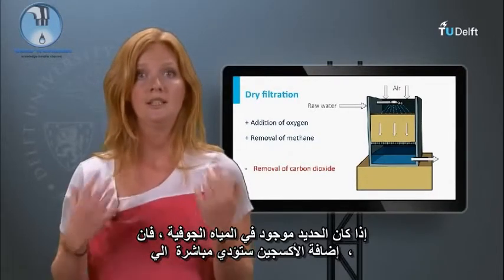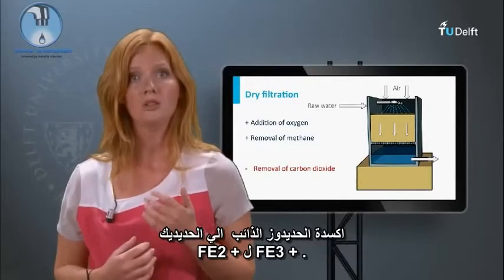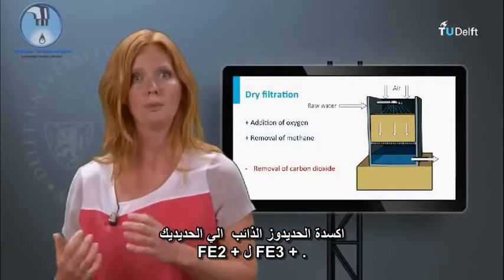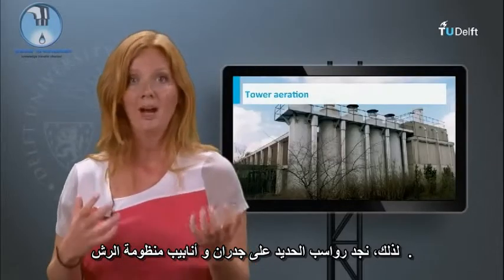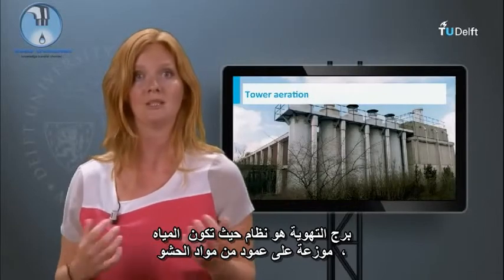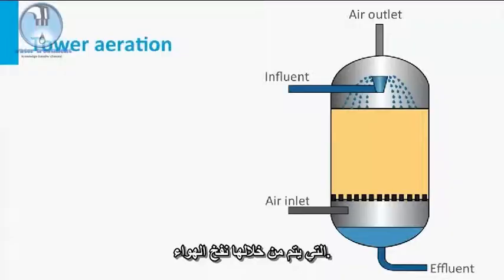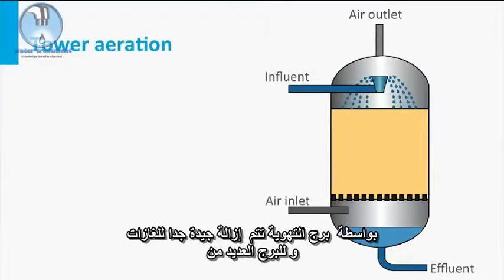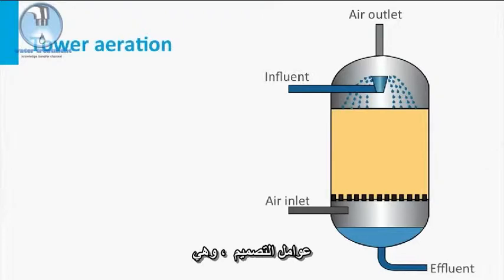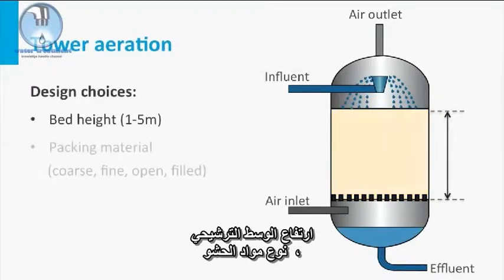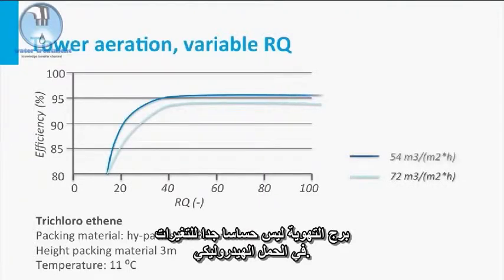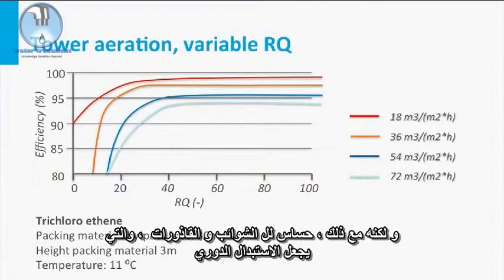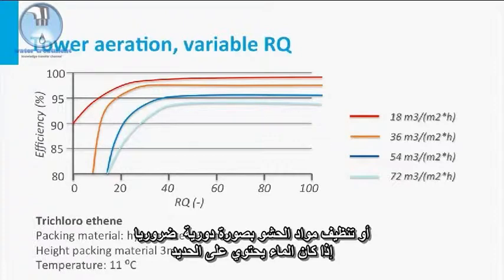If iron is present in the groundwater, the addition of oxygen to the water results almost directly in the oxidation of the dissolved Fe2+ to Fe3+. Therefore, on the walls and pipes of the spraying systems, iron deposits can be found. Tower aeration is a system where water is distributed over a column with packing material, through which air is blown. With tower aeration, very good removal of gases is possible, and the tower can be configured by a few clear design choices, namely bed height, type of packing material, air flow direction and choice of RQ. Tower aeration is not very sensitive to variations in hydraulic load, but is sensitive to fouling, which makes regular replacement or cleaning of the packing material necessary if the water contains iron.